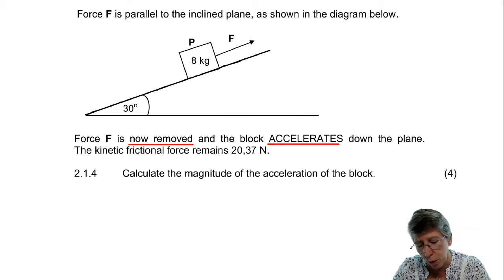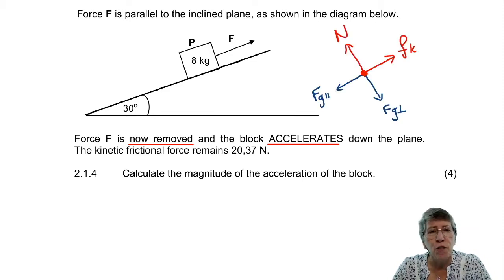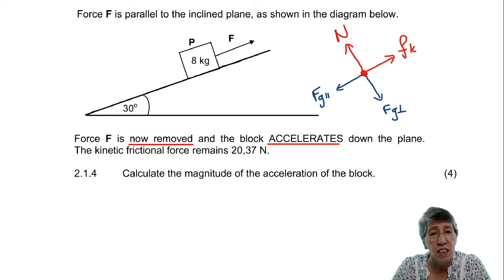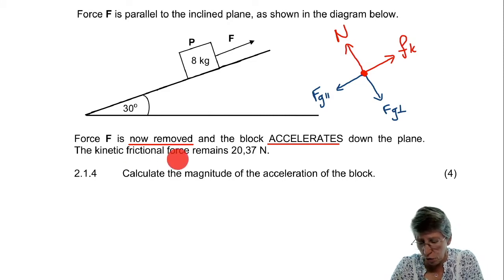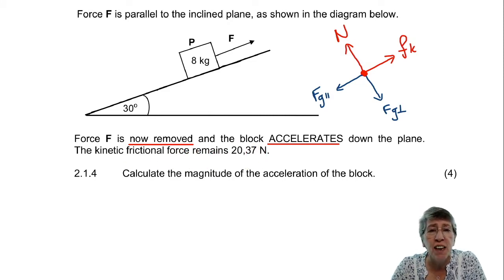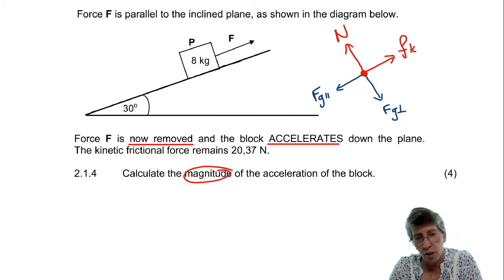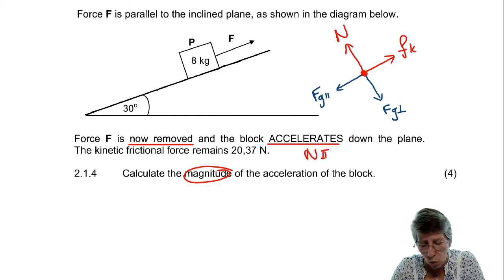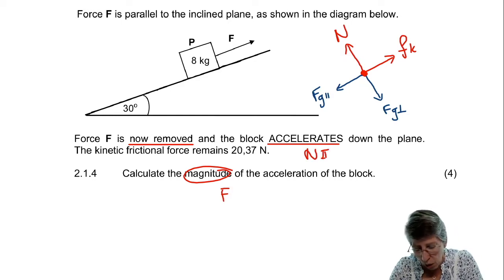Now we need to look at the forces again. This time we've got a frictional force upwards because we are accelerating down the plane, and we still have the normal force and gravity as before. They tell us that the frictional force remains 20.37 N, and now they ask us to calculate the magnitude of the acceleration of the block. If they want the acceleration, that's all about Newton's second law, and I'm definitely going to start with F net equals M times A.